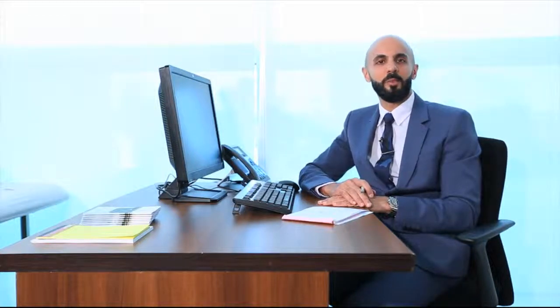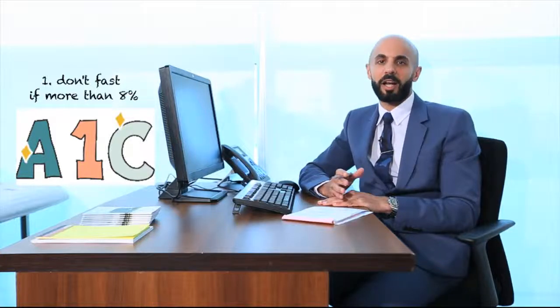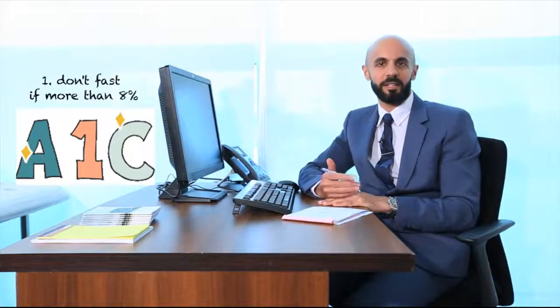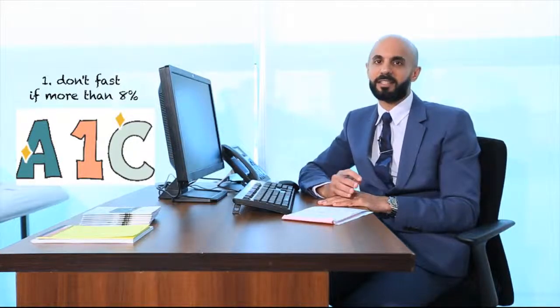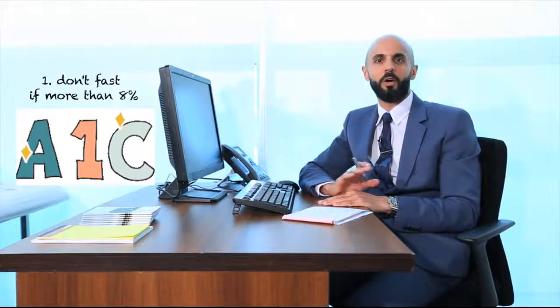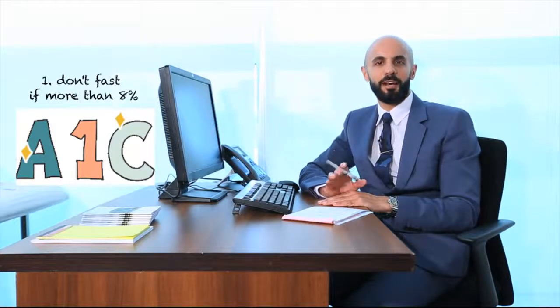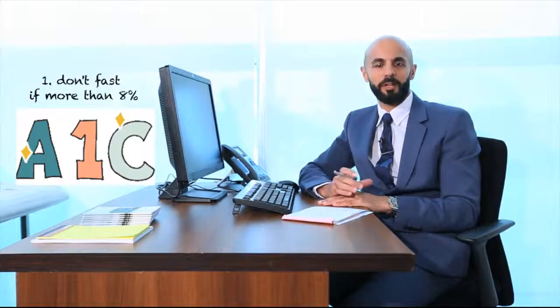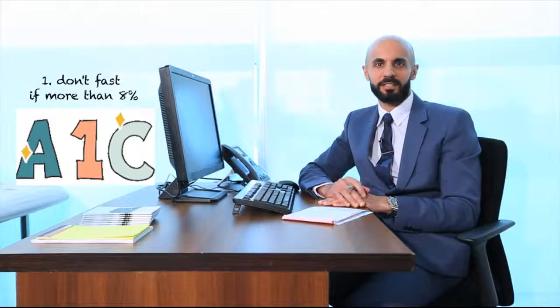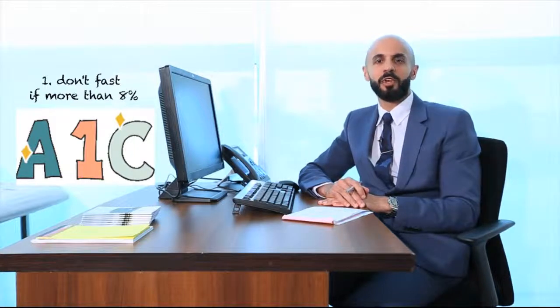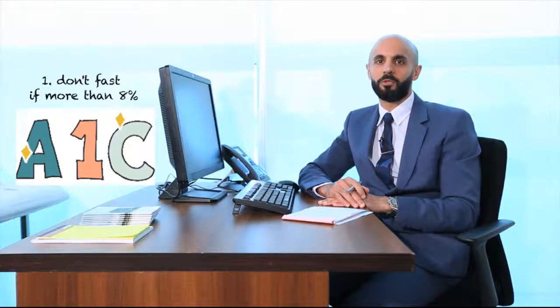If your hemoglobin A1c is more than 8%. What I mean by hemoglobin A1c is the blood test that we usually do every three months in clinic, taken by a finger prick or a blood venous sampling. It measures your average blood sugar in the prior three months. The target range for adolescents is 7%, so if your A1c is above 8%, we don't recommend you to fast.